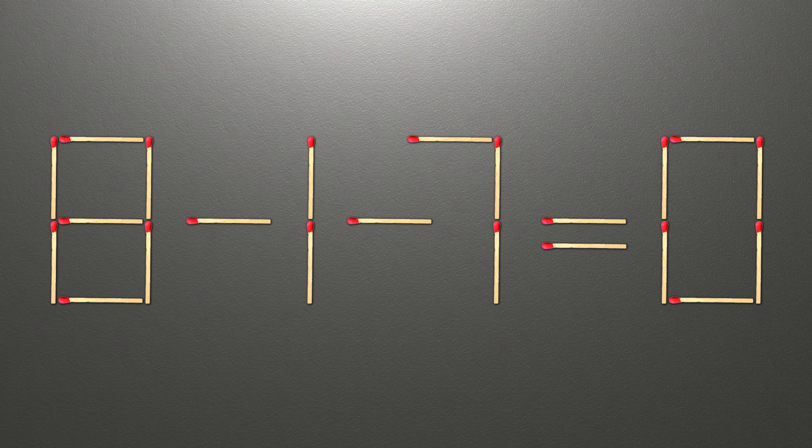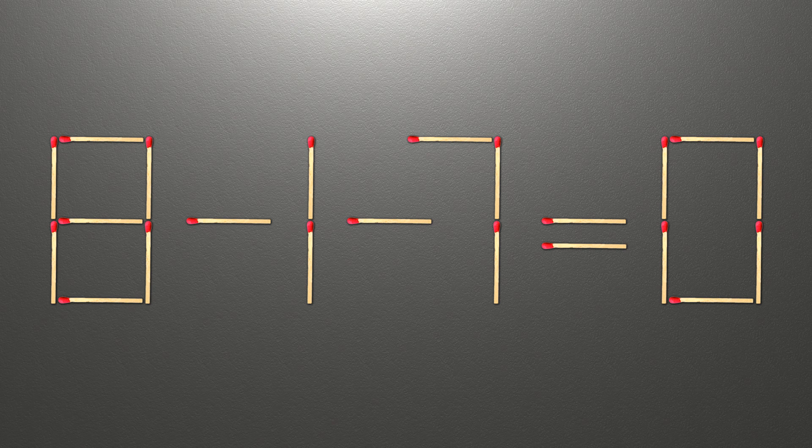Now, when we check the condition, 8 minus 1 minus 7 is 0, and 0 equals 0. Now our equality is correct.